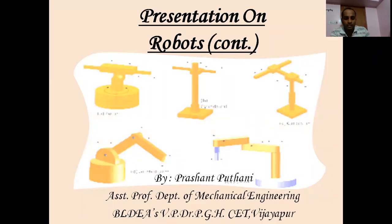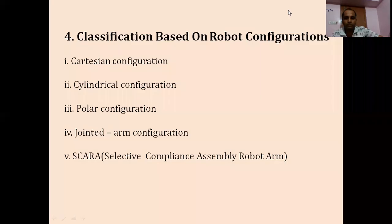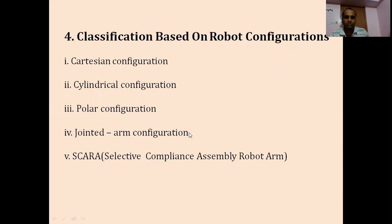Hello students. In the last video we discussed the definition of robots, robot anatomy, the parts of a robot, and different types of motions. We also saw an introduction to the classification of robot configurations. In today's lecture we'll be discussing all those robot configurations in detail — their advantages, disadvantages, and applications. We covered up to the introduction of Cartesian, cylindrical, polar, jointed arm, and SCARA configurations.